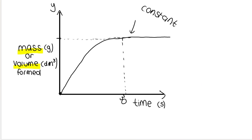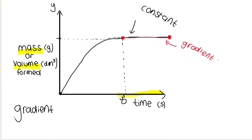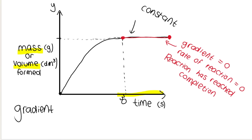What is extremely important to note about rates of reaction graphs is that if we have time on the x-axis, then the gradient of this graph represents the rate of reaction. Over here where the line is flat — a horizontal line — the gradient is zero, which means the rate of reaction is zero. It means that the reaction has reached completion. No more product is being produced. The gradient represents the rate of reaction.